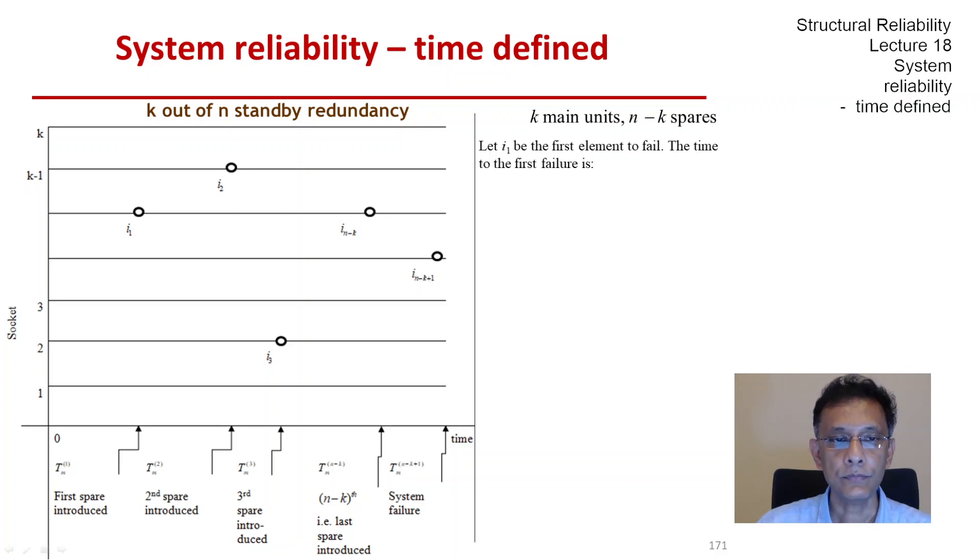Let's start the clock. Let i_1 be the first element to fail. The time to the first failure is the smallest one, the smallest of all the t_i's. That first failure is the element identified as i_1, and we note that quantity t_m superscript 1 in parentheses.